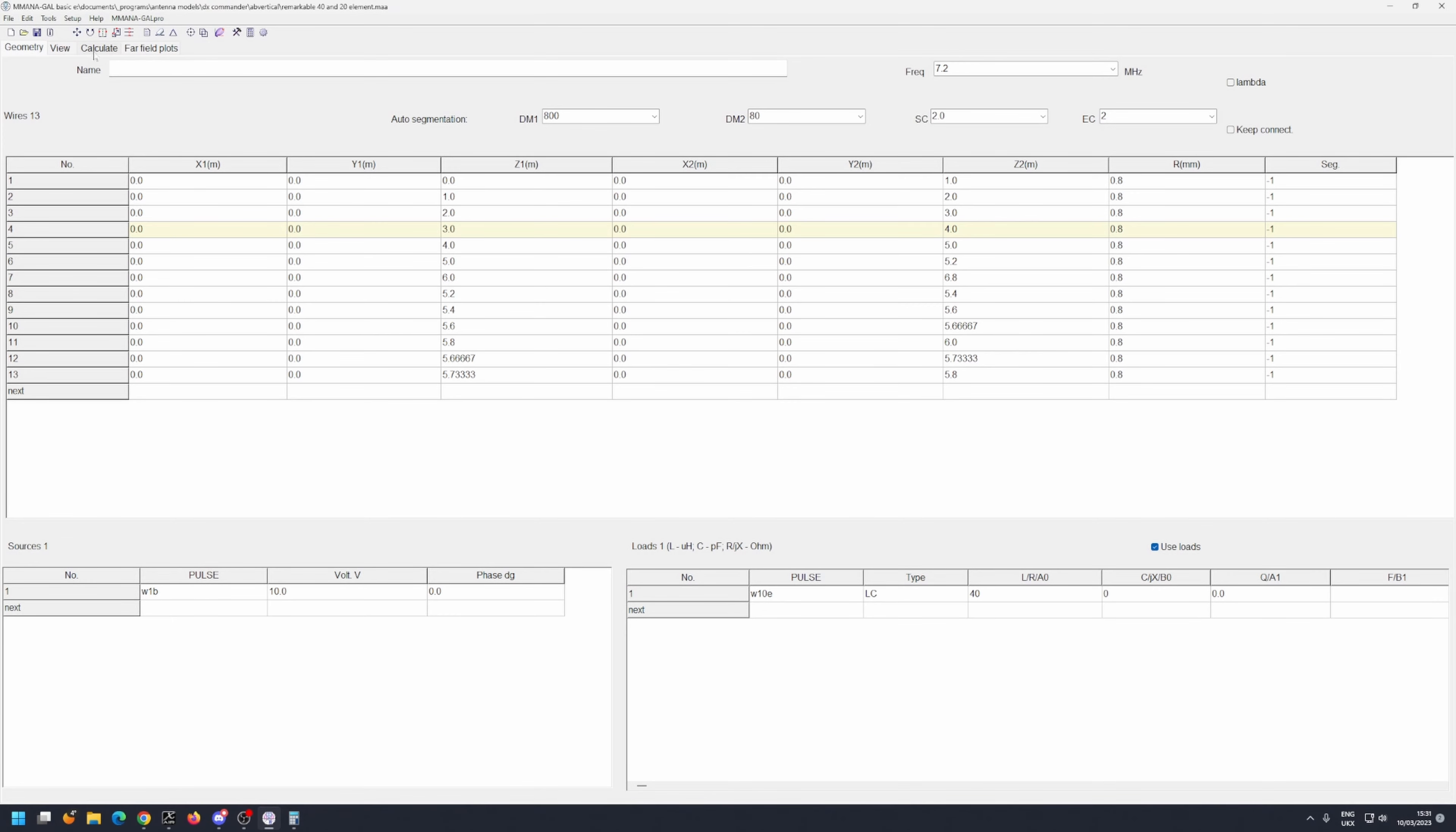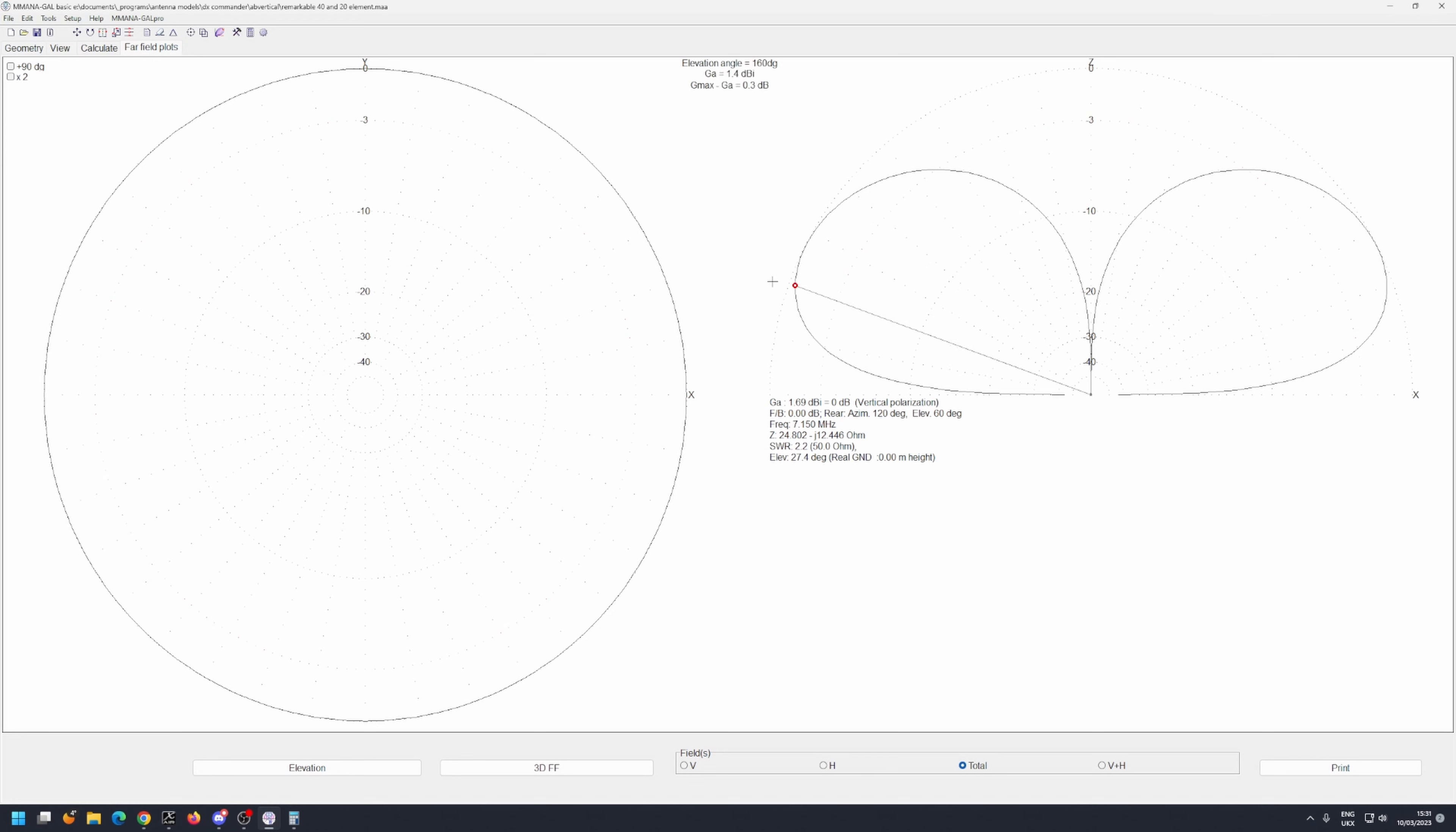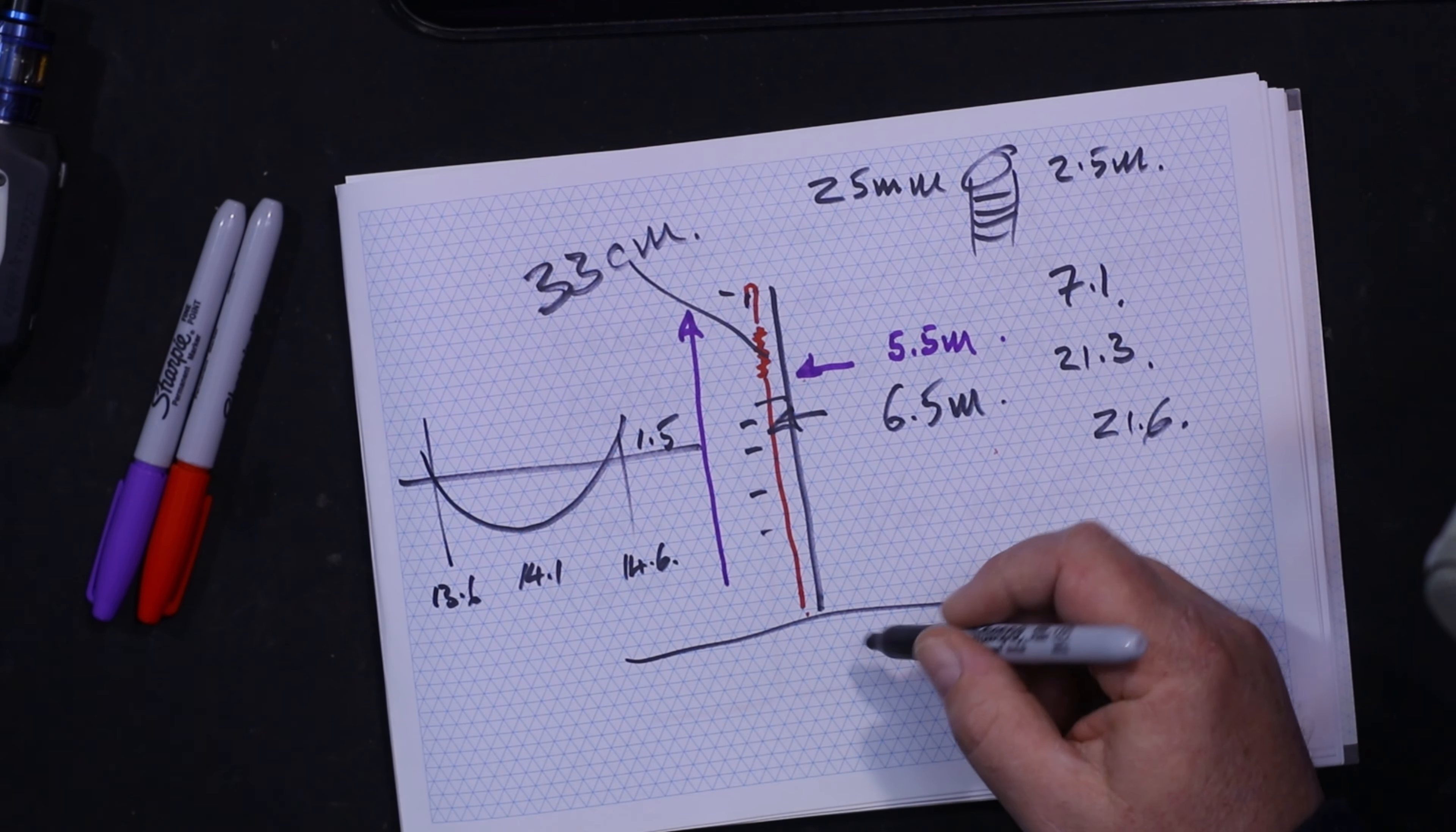I'll check what the math says. Does the math think we've got a bit of loss? Looking at 7.15 megahertz, the far field plot shows not really any loss.